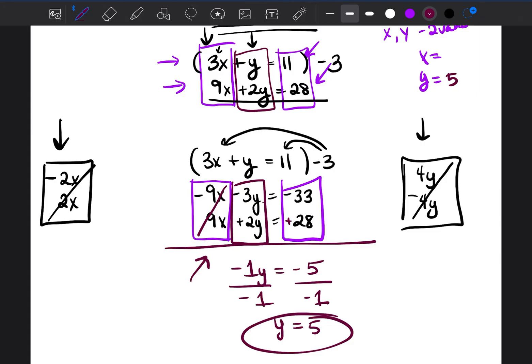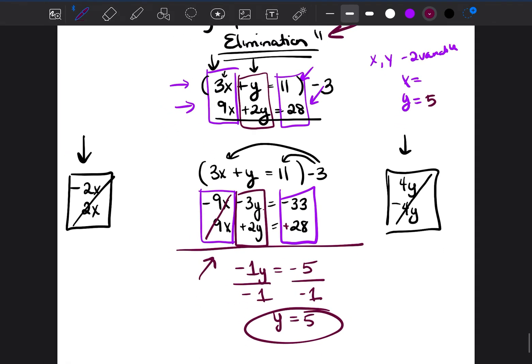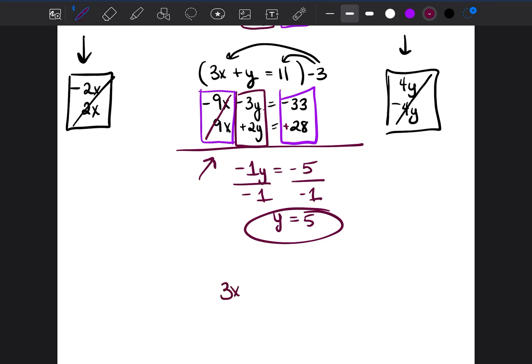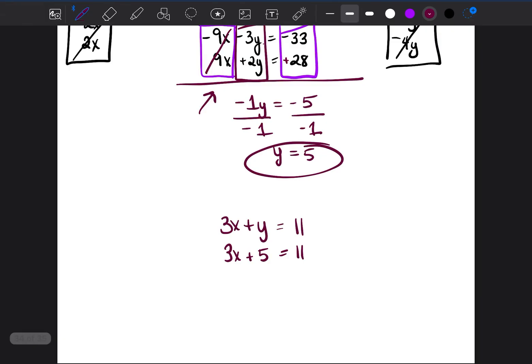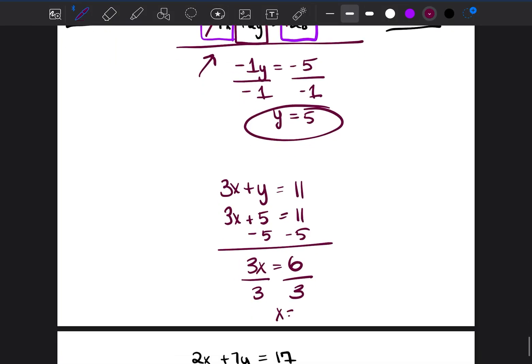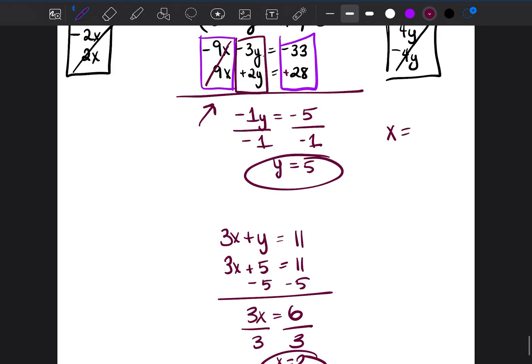So now let's go ahead and put that number 5 into our original equation to see if we can solve for x. So it's 3x plus y is equal to 11. We now know that y is equal to 5, which should be equal to 11. So now we're going to go ahead and solve for x. So we're going to subtract 5 from both sides. 3x is equal to 6. And we're going to divide by 3, and x is going to be equal to 2. So x is equal to 2, y is equal to 5.